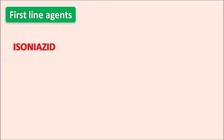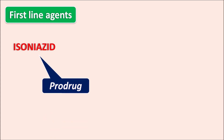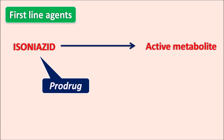Now let us look at the first line agents. The first one is isoniazid. Isoniazid is actually a prodrug which is activated within the mycobacteria. It is converted into active metabolites by the enzyme catalase-peroxidase, which is present within the mycobacteria. So activation of isoniazid depends on mycobacterial enzymes.